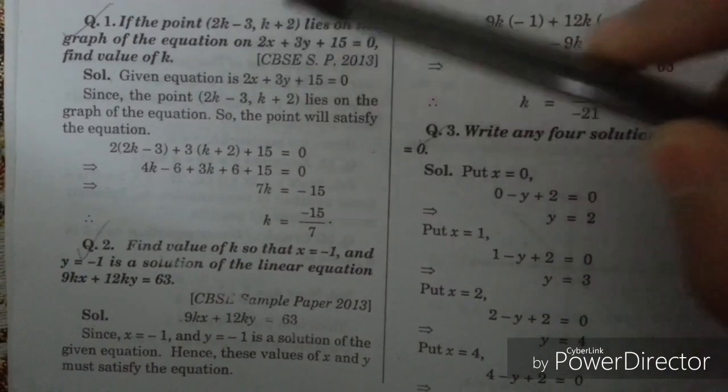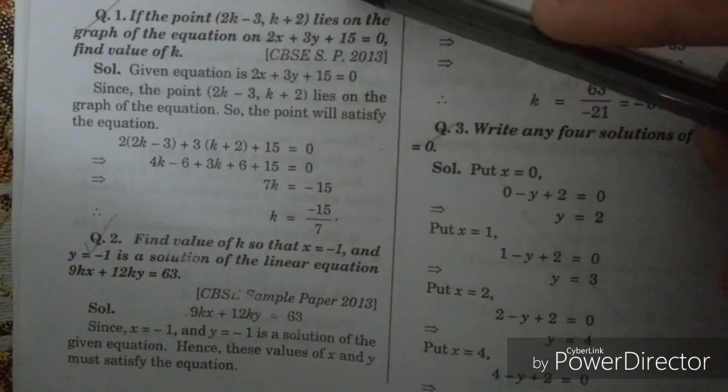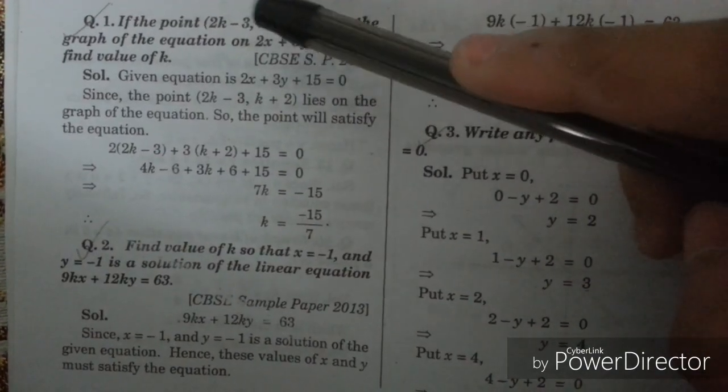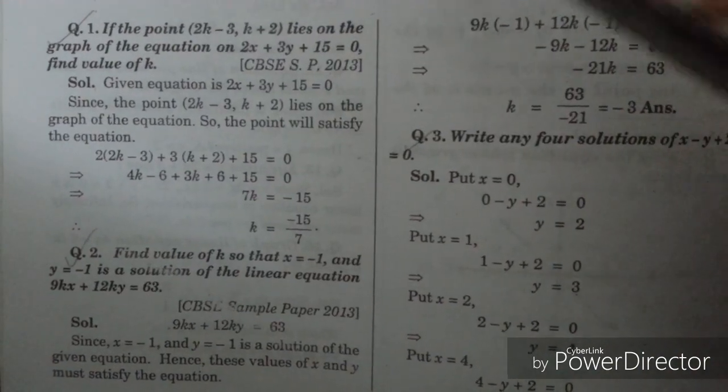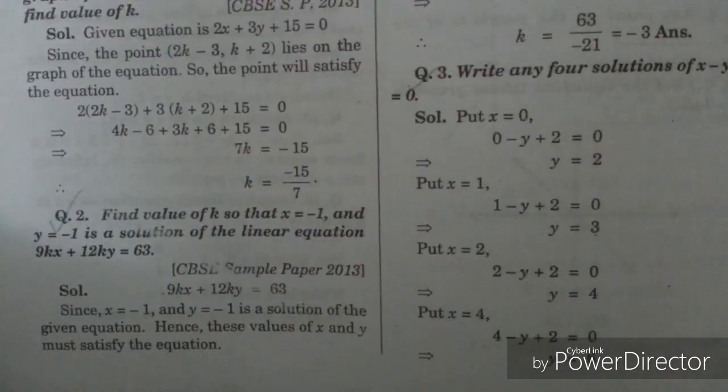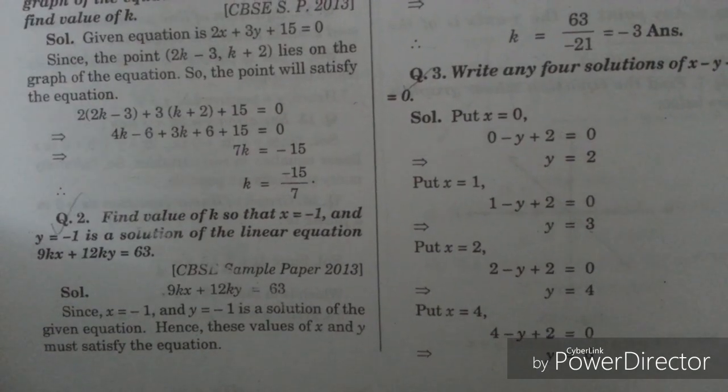So 2k minus 3 would be x and k plus 2 would be y. So you have to put that values of x and y in this equation and then you would be able to find the value of k.